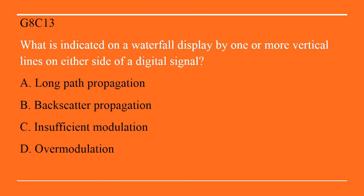G8C13: What is indicated on the waterfall display by one or more vertical lines on either side of a digital signal? A. Long path propagation. B. Back scatter propagation. C. Insufficient modulation. Or D. Over modulation. The answer is D, over modulation.